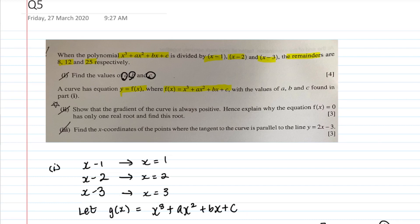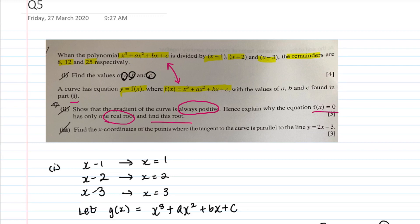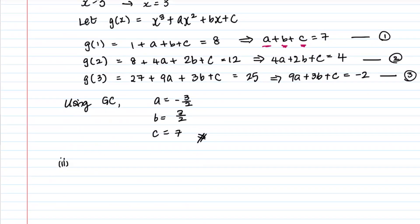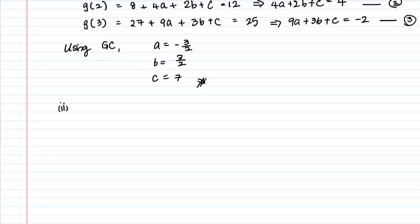Part 2: a curve has equation y = f(x). Notice that parts always link — f(x) uses the same equation x³ + ax² + bx + c with the values found in Part 1. Substituting those values: f(x) = x³ − (3/2)x² + (3/2)x + 7.